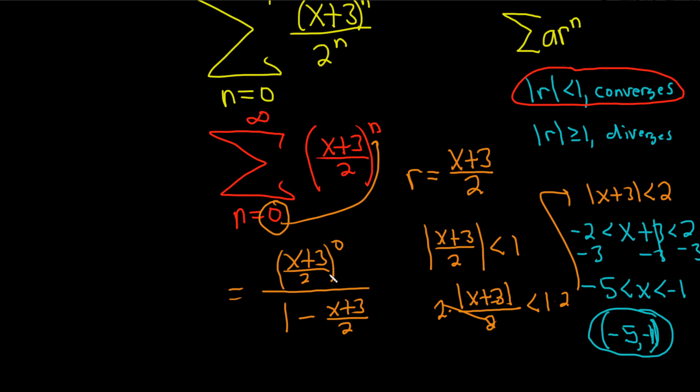This always works. Whenever you're looking for the sum of a convergent geometric series, you just take whatever is here, you plug it in, and then just divide by 1-r.